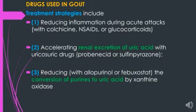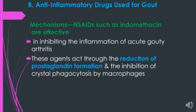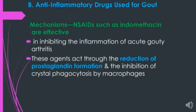Aspirin is not used in gout as it may cause hyperuricemia, and tolmetin is not effective. Colchicine is more effective and faster acting than NSAIDs, but it is used rarely due to its high toxicity levels.